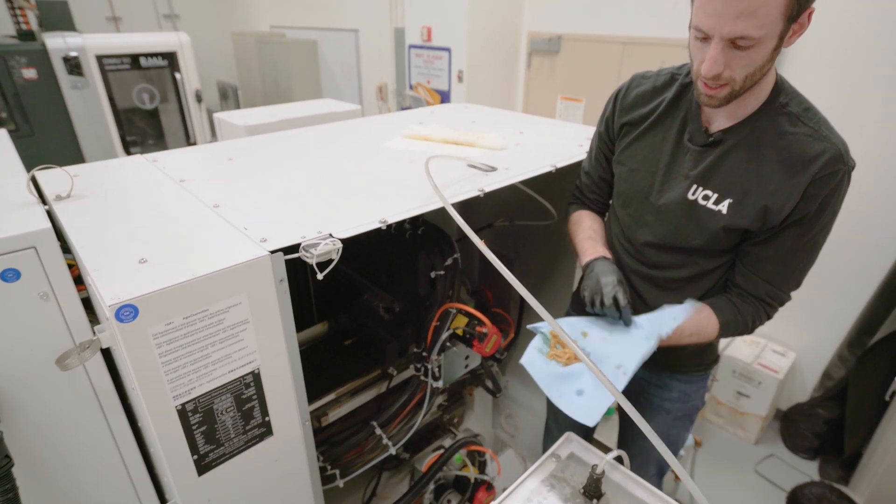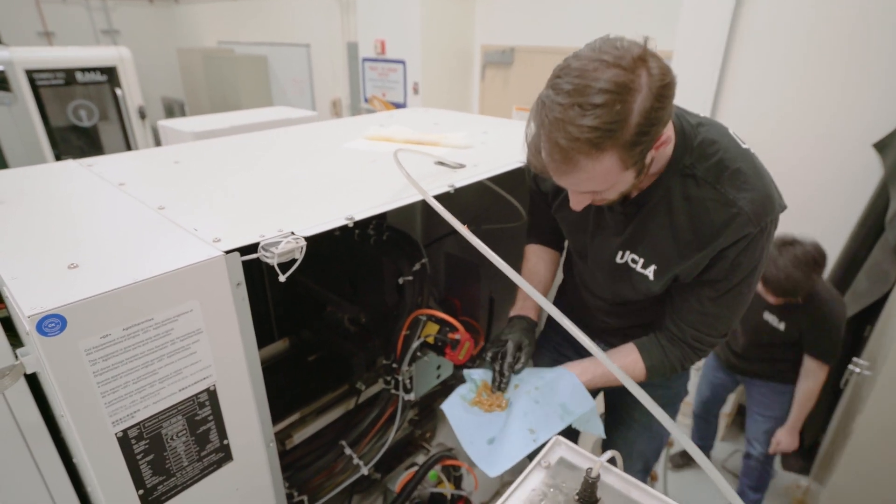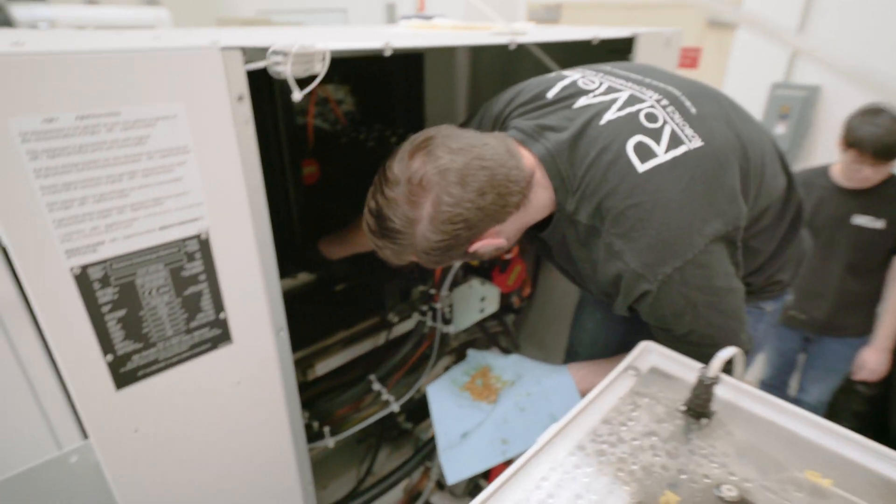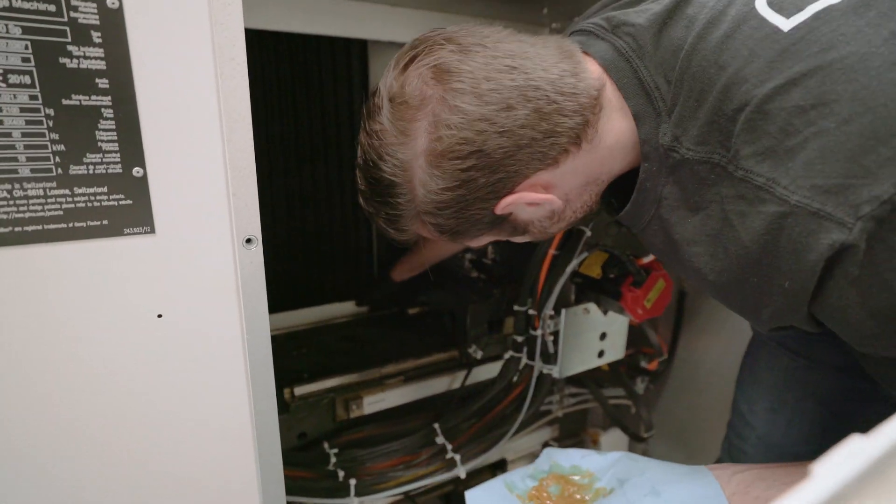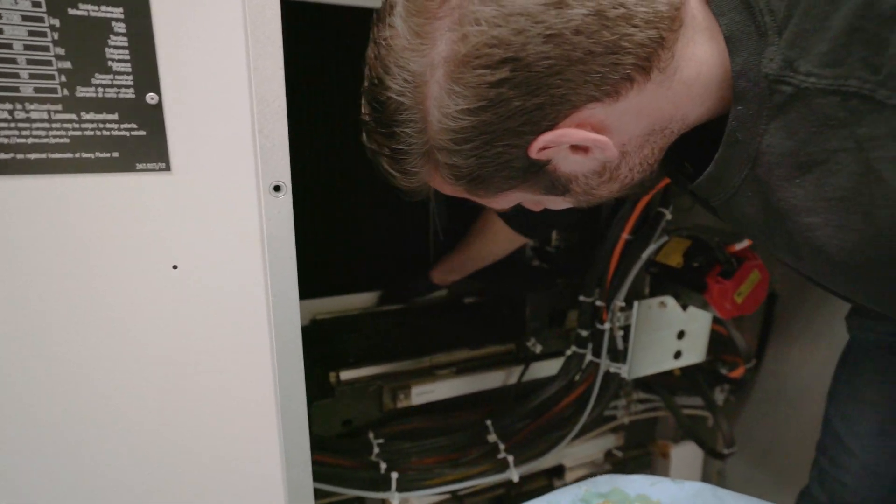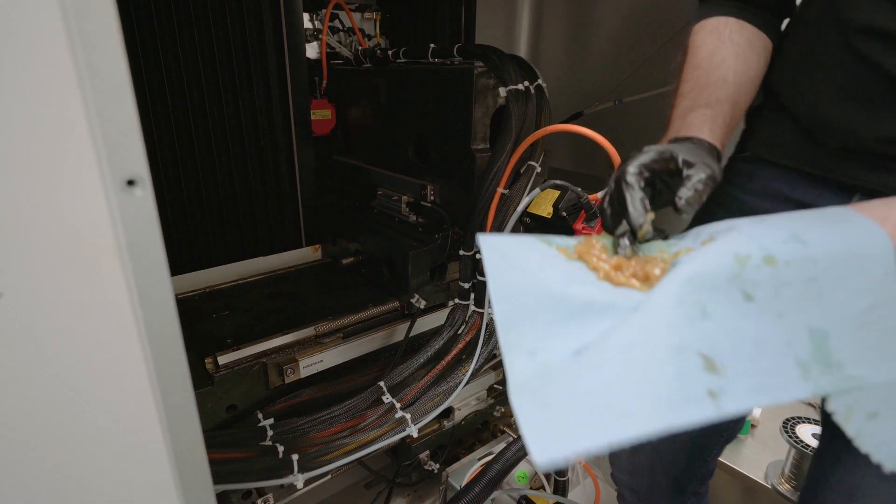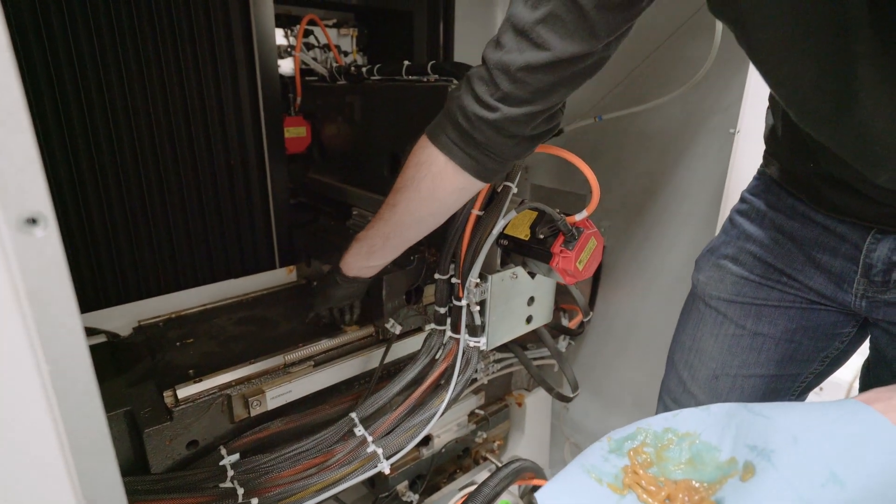And we're just going to apply it with our fingers. So just give a liberal amount and rub it on both the rails and the needle bearings. There should be a thin layer of new grease that coats everything.